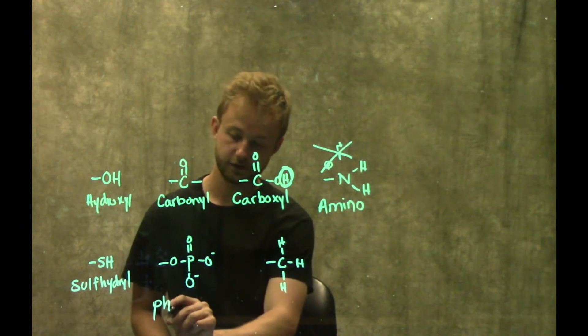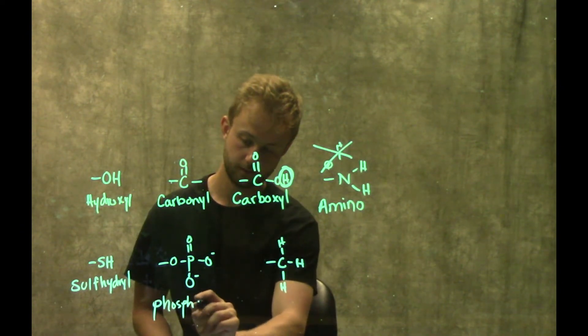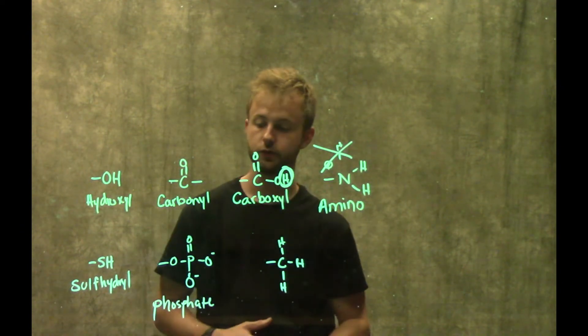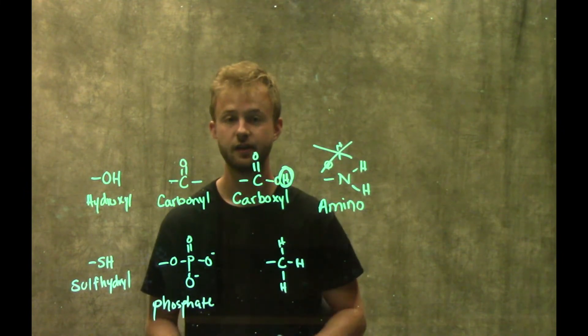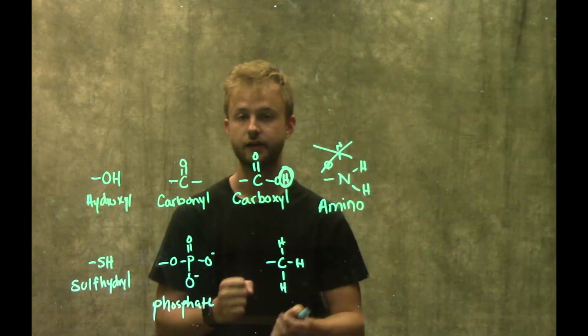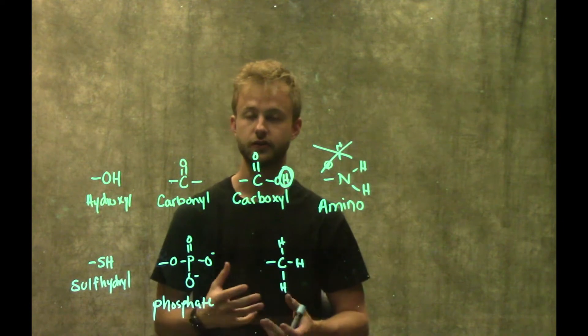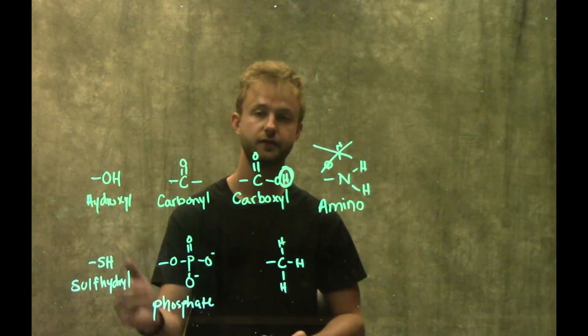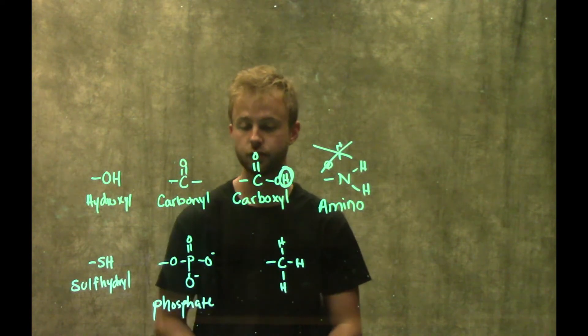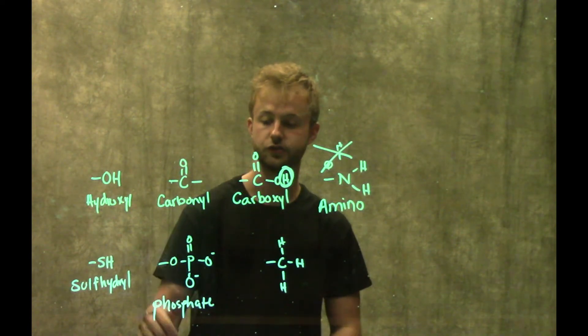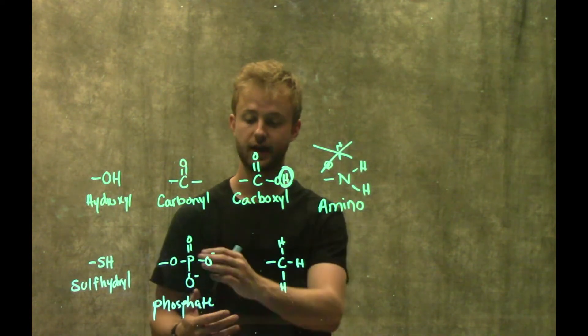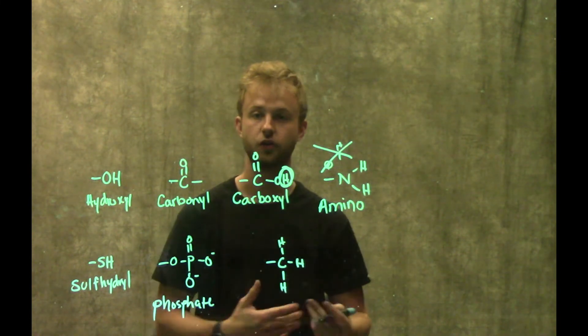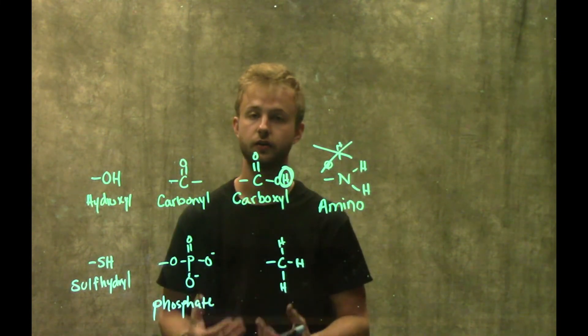The next group we're going to look at is this phosphate group. Phosphate groups are very important in nucleic acids—they're part of the structure of our DNA. That's why it's called a phosphodiester bond, the bond between two nucleotides, because we have this phosphate group in it. This group is also important in being able to interact with water molecules because we have these oxygen atoms that can interact with the hydrogens on the water molecules.